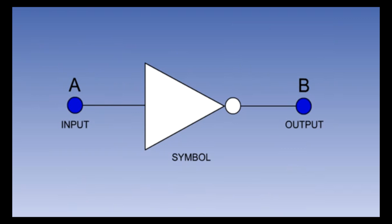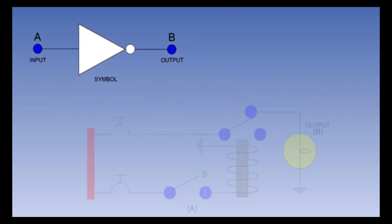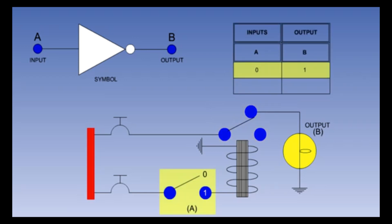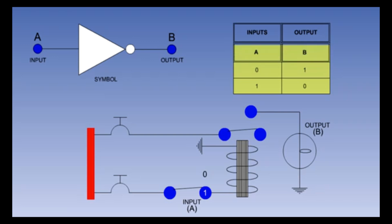The Invert gate, sometimes known as the NOT gate, contains only one input and one output and is used to reverse the condition of the input signal. It is most often used in conjunction with other gates. Electrically, an invert circuit can be represented by a switch controlling a relay, the contact of which is made when the relay is de-energized. With the switch open (position zero), the light is on, representing an output of one. But with the switch closed (position one), the light is out, representing an output of zero. There is a very simple truth table for an invert or NOT gate.